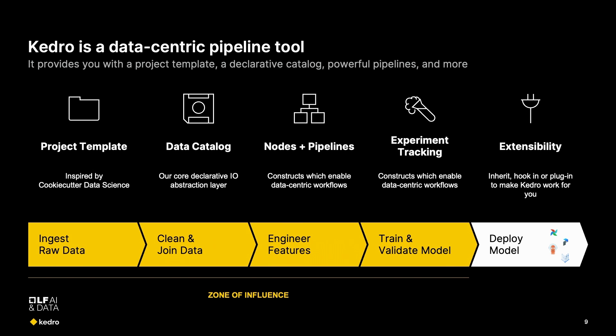All Kedro projects are structured around nodes and pipelines. Nodes are specific functions that perform some sort of processing. All these functions are then arranged according to their inputs and outputs so that they form a pipeline. Kedro will then execute that pipeline, sorting the steps in the right order to respect all the inputs and outputs.